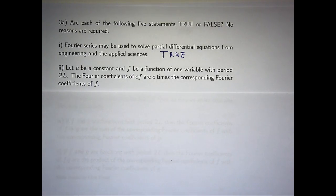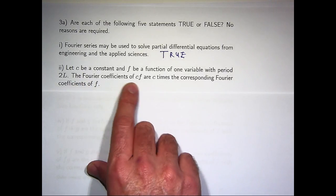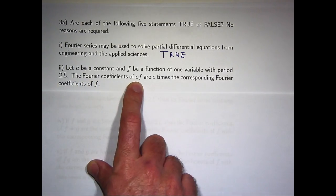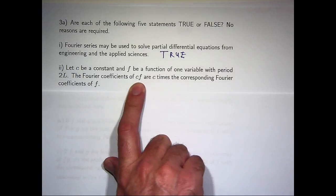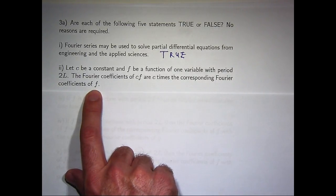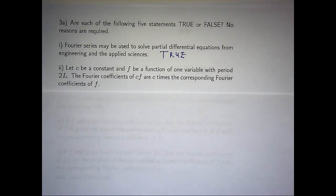This one looks a little bit harder. Let c be a constant and f be a function of one variable with period 2l, where l is some positive number. Suppose I can calculate the Fourier coefficients of f. Well, is the following statement true or false? If I have another function, c times f, where c is a constant, 2, 3, 5, minus pi, and I want to calculate the Fourier coefficients for this more general function, can I just take the Fourier coefficients for f and multiply all their values by c? Is it true or false? Who thinks it's true? Hands up. Who thinks it's false? Who's not sure?